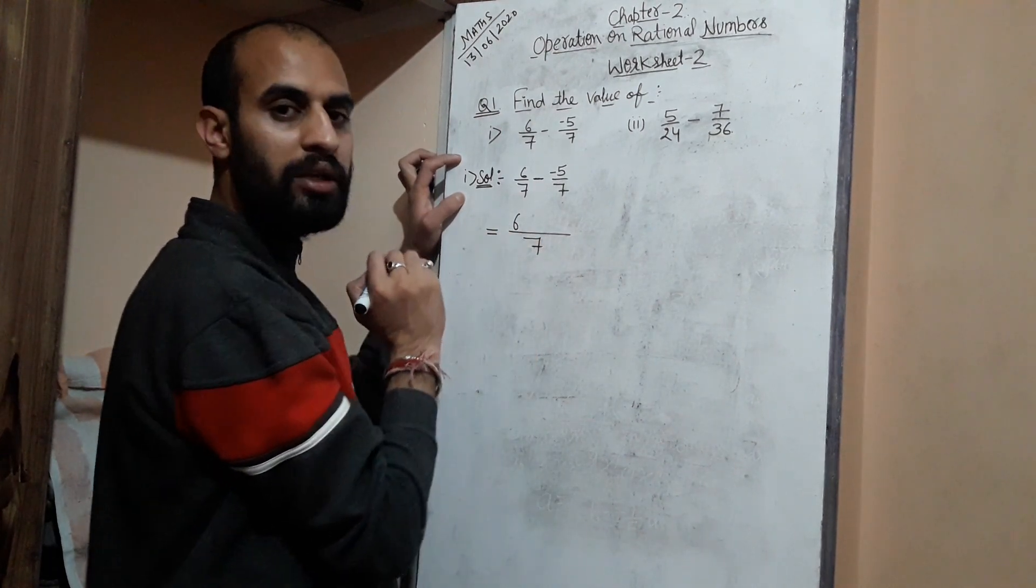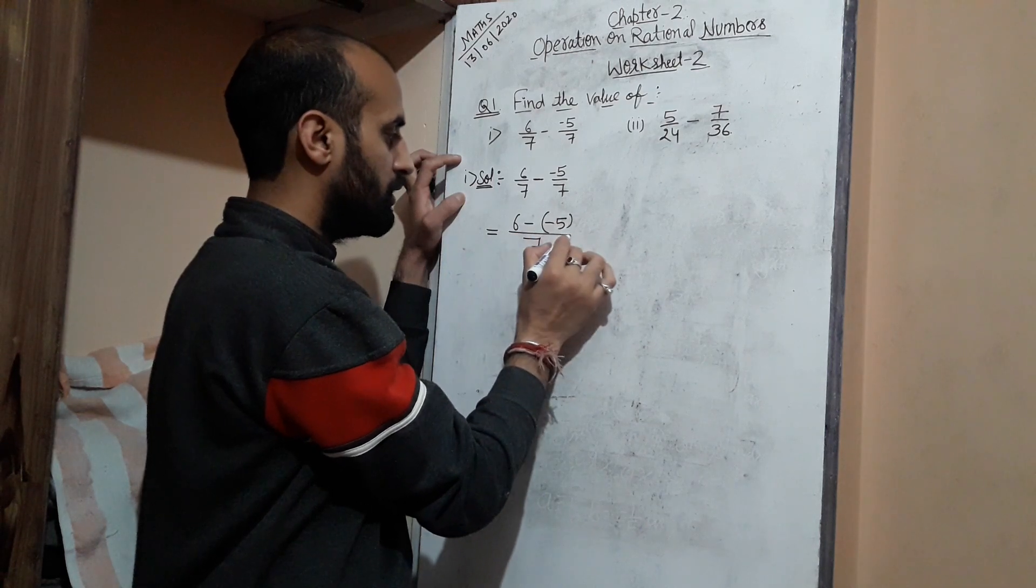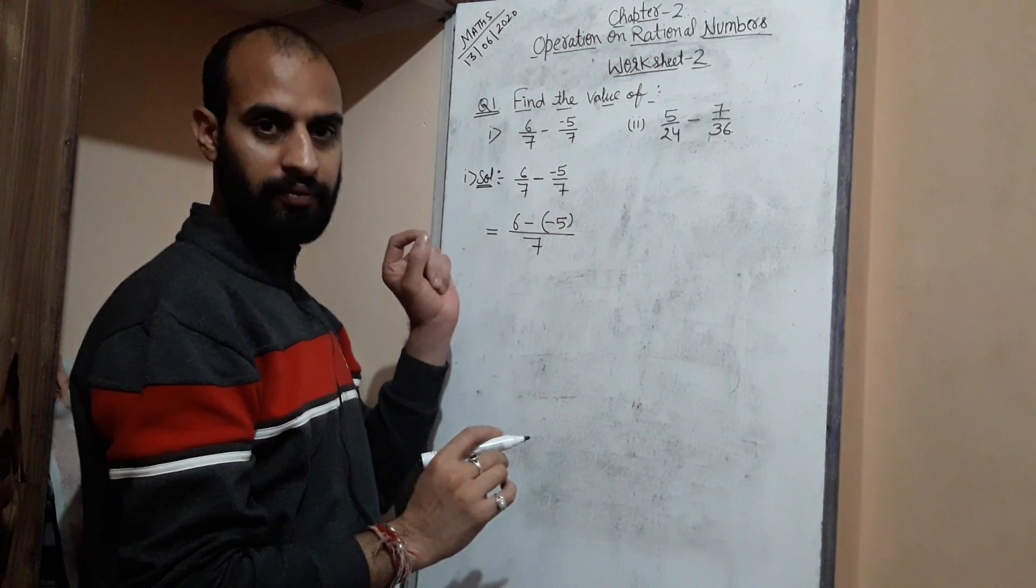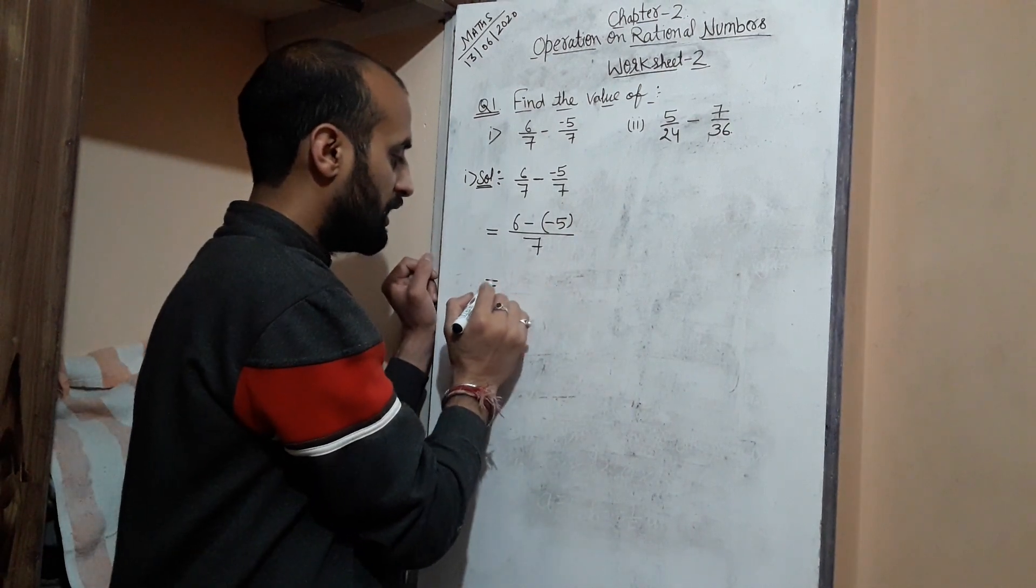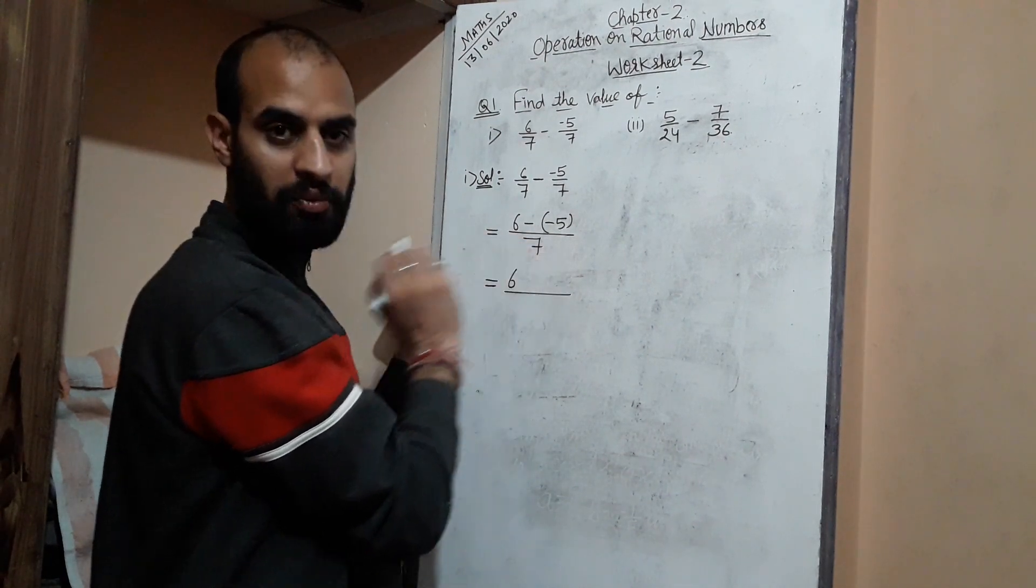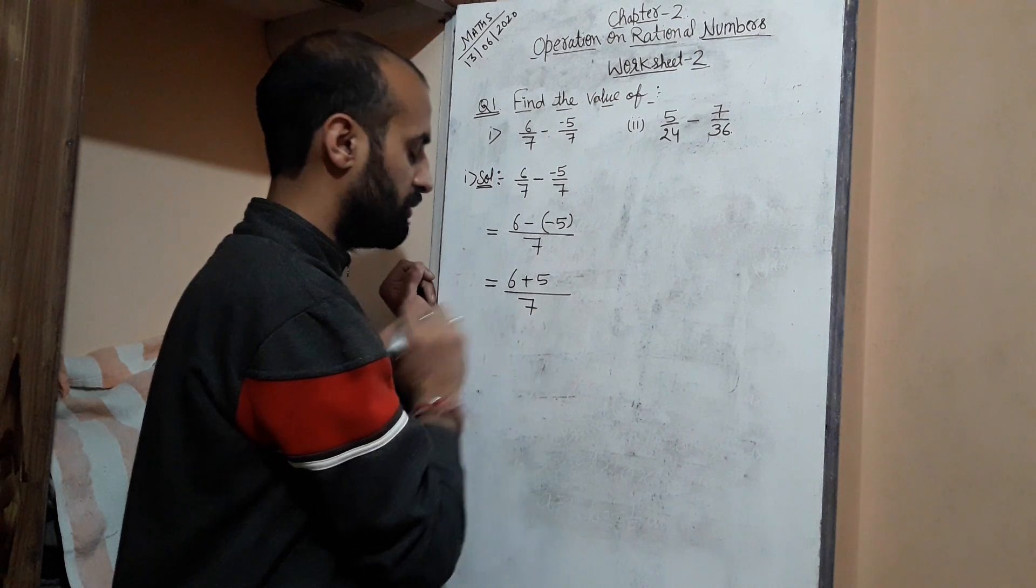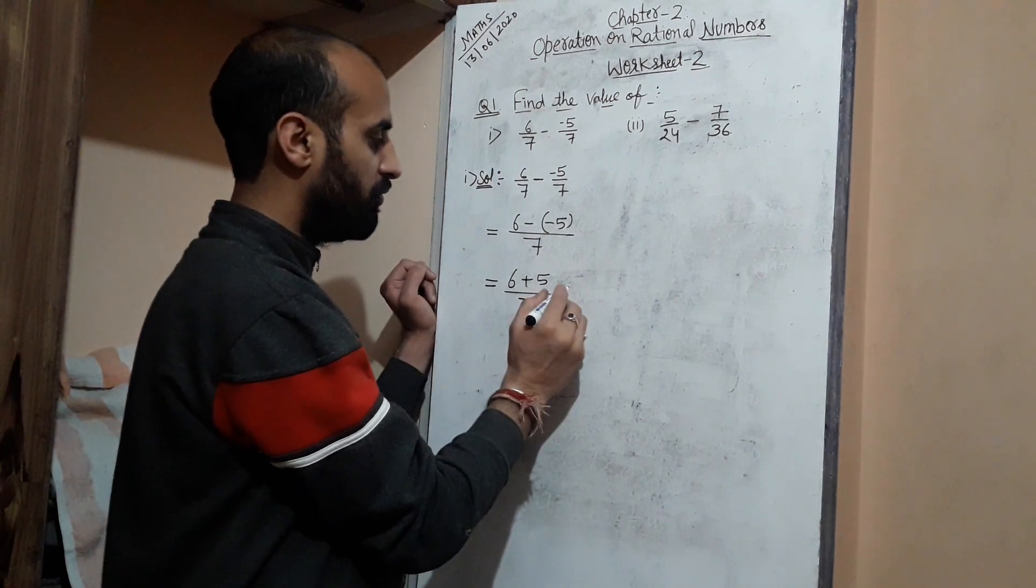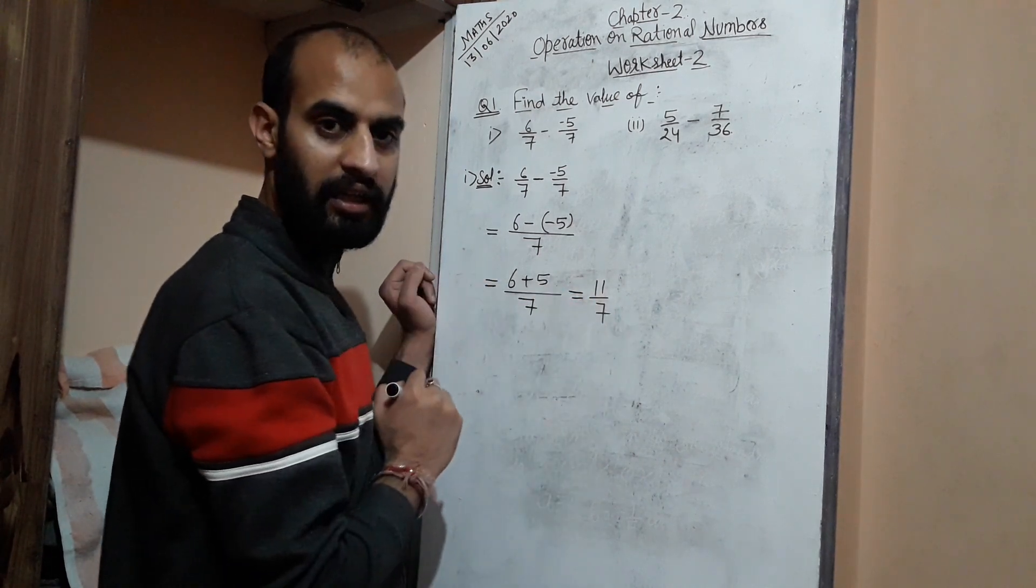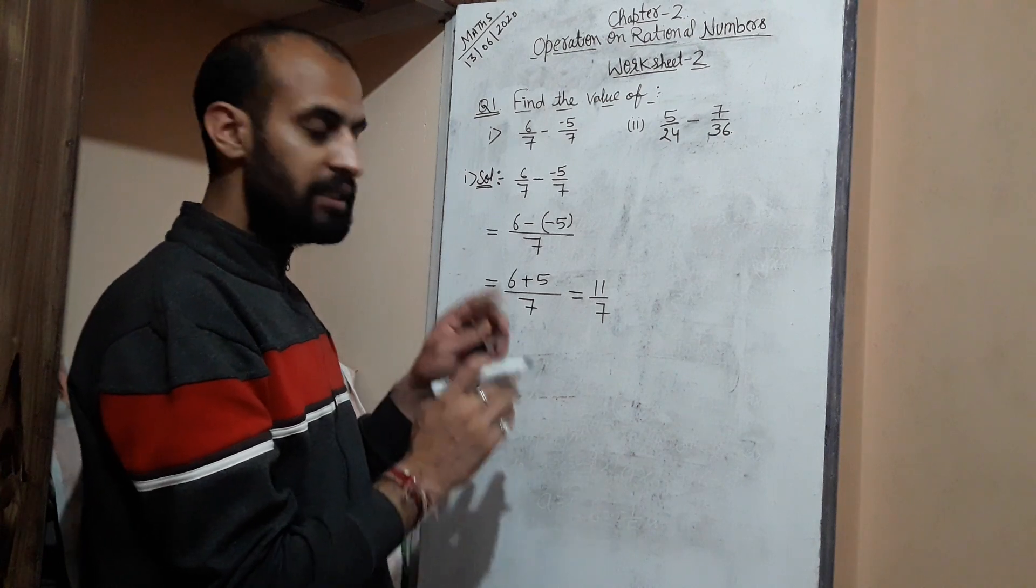Here I am going to subtract these two values. I need to subtract 6 minus (-5). Your first task is to multiply this minus sign inside: minus times minus, you will get a plus sign. So if we are adding 6 plus 5, you will get 11. So 11/7 is your answer.